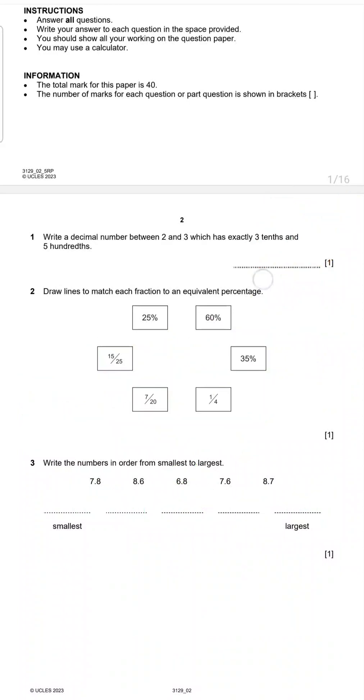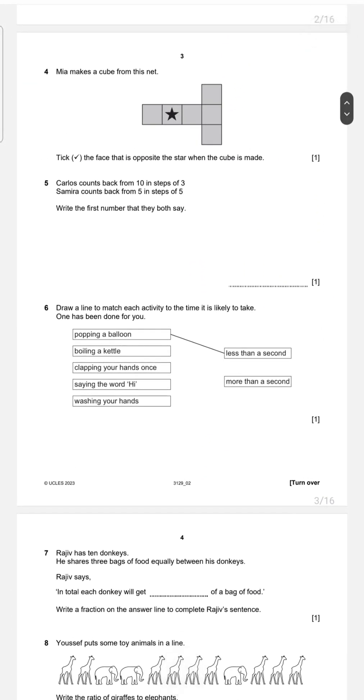Let me continue with 4. Mia makes a cube from this net. Tick the face that is opposite the star when the cube is made. So what is the opposite face of the star? Dear, look near to star here and here. This shouldn't be opposite face of it because that is near to star. And this is the close face, not opposite. And look at here and here. They are also, when you make the cube, it should be close to star. So we have just one choice, that is here. This is the opposite face.